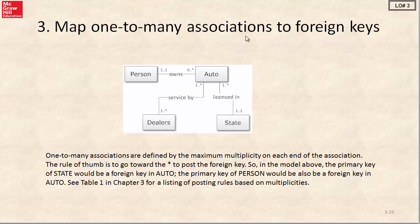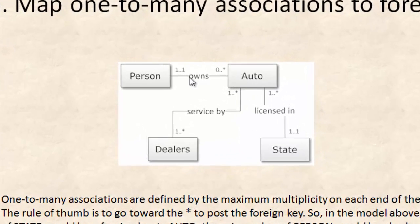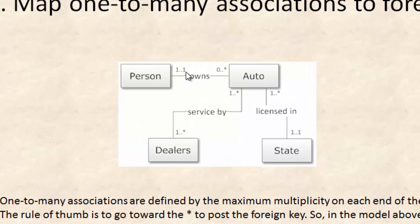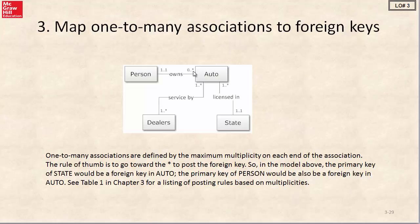The one-to-many associations require foreign keys. A one-to-many association is defined by the maximum multiplicity. For persons and autos, the maximum next to persons is one, and the maximum next to autos is many, so this is a one-to-many relationship. The rule of thumb is to go toward the many — in other words, we would put person ID, the primary key of persons, as a foreign key in the autos table.